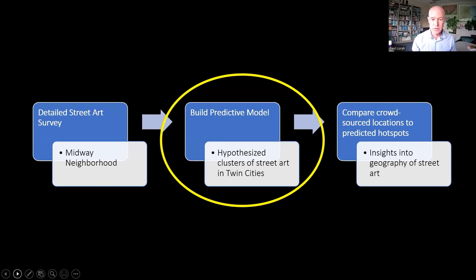So we gained lots of insight about the geography of street art in this one neighborhood. And in the second stage of the project, we used insights from our field work to build a predictive model for the geography of street art in the entire Twin Cities metro area.